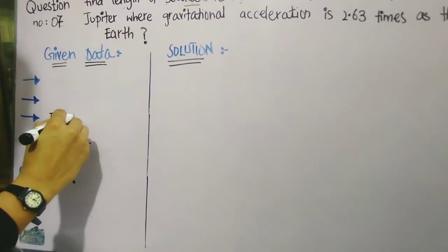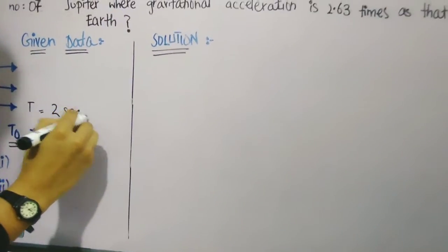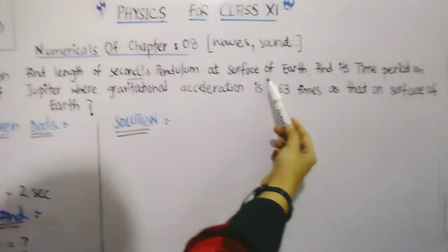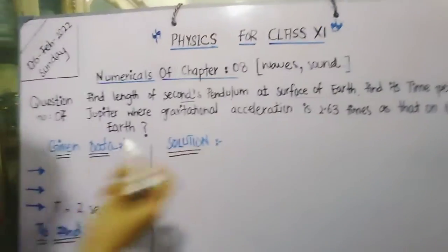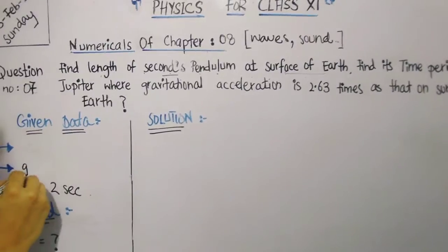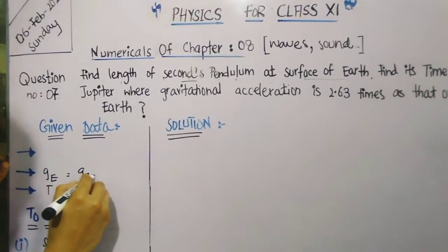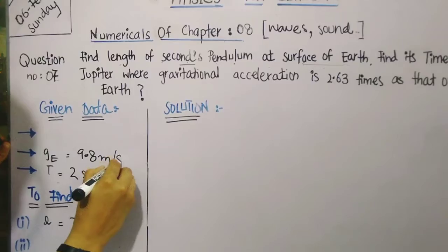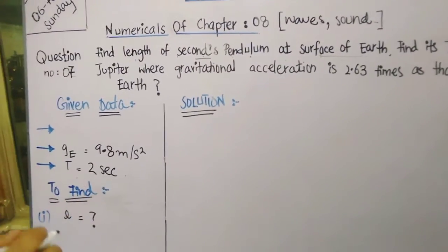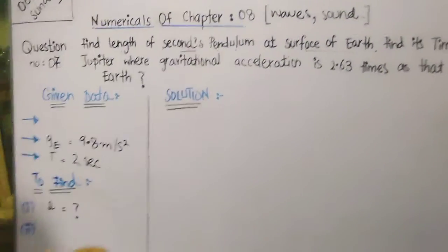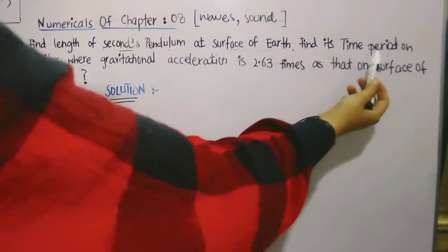We need to find the second pendulum, and we always know that for the second pendulum our time period will be 2 seconds. And at the surface of the Earth, this means that our gravity will be 9.8 meters per second squared, or you can also take 10 meters per second squared as you wish. So these are the three informations that we get by reading the first sentence.